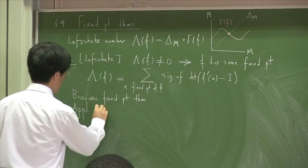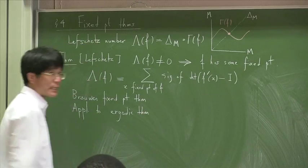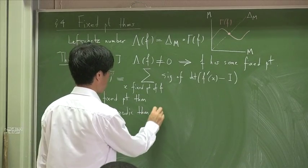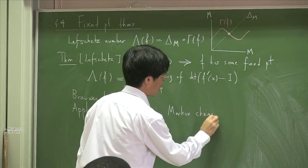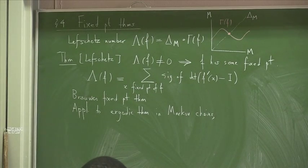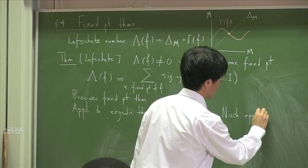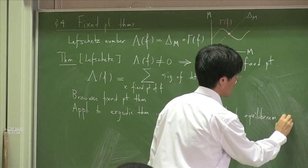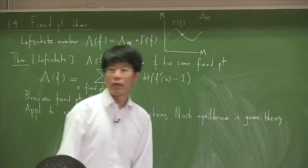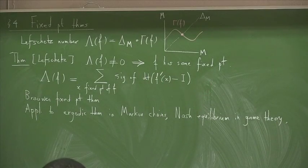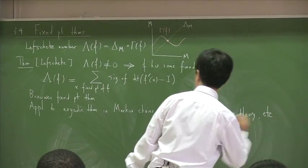We had many applications afterwards. Applications to the ergodic theorem—statistical equilibrium in the Markov chain—applications in probability or statistical physics. We also mentioned Nash equilibrium in game theory or economics, and the rather facetious discussion about stirring coffee or dropping a map. Applications are nearly endless.